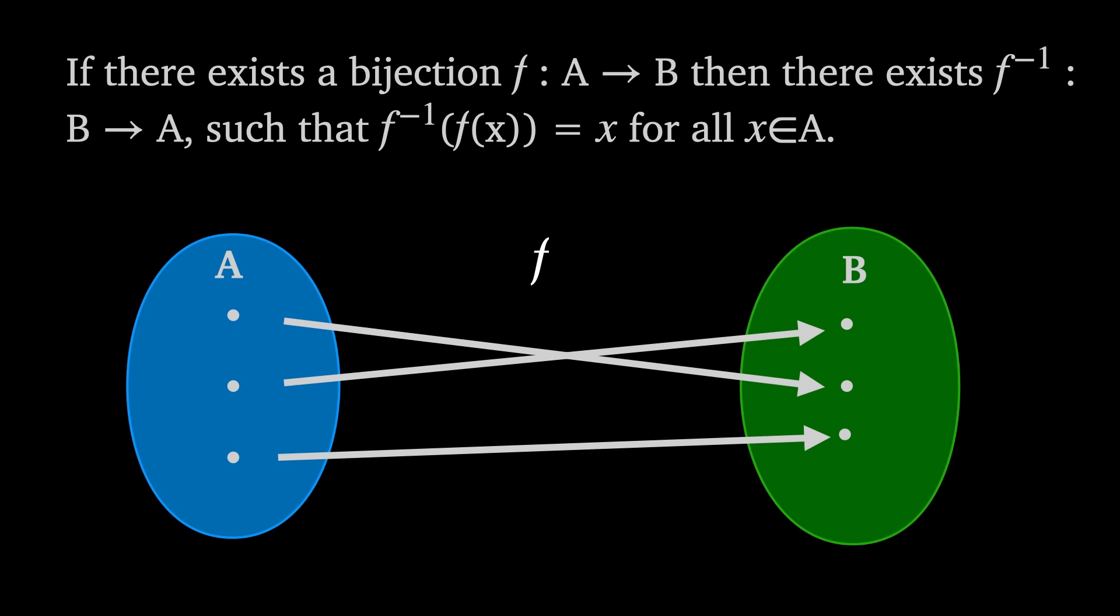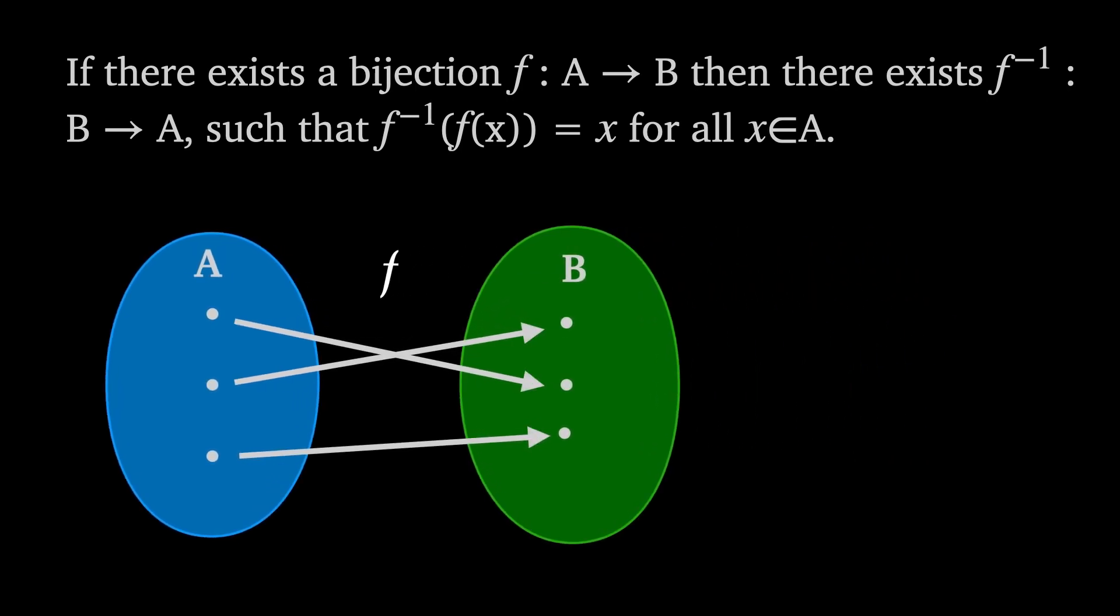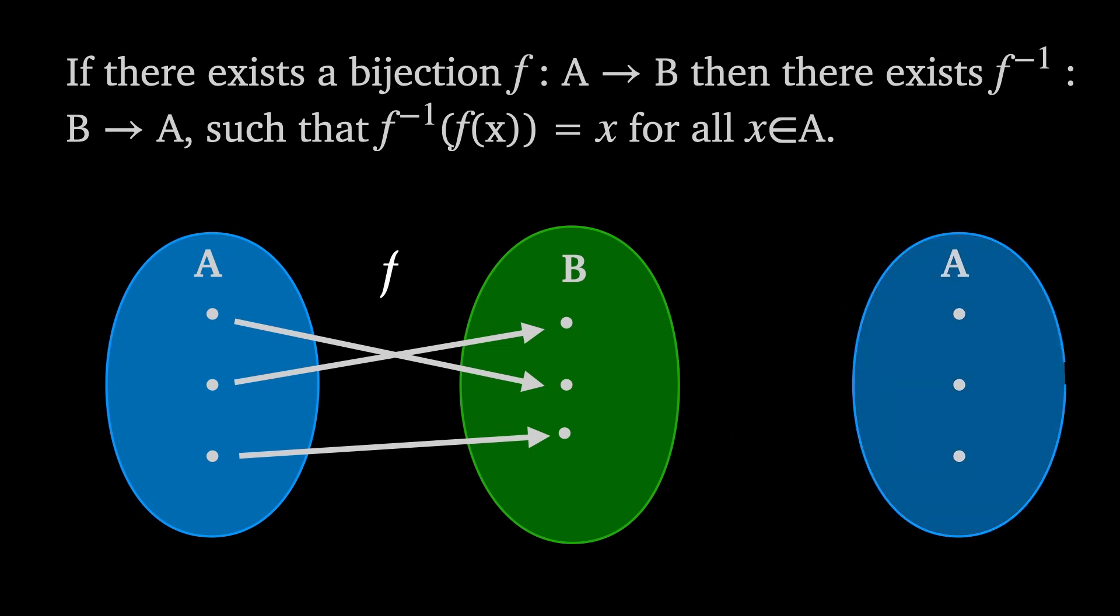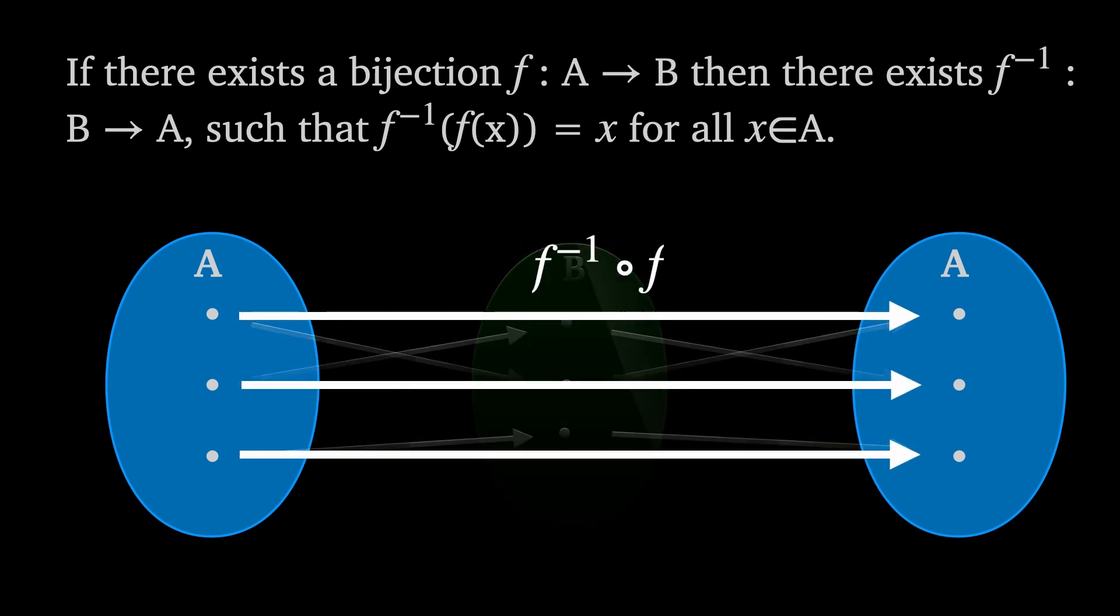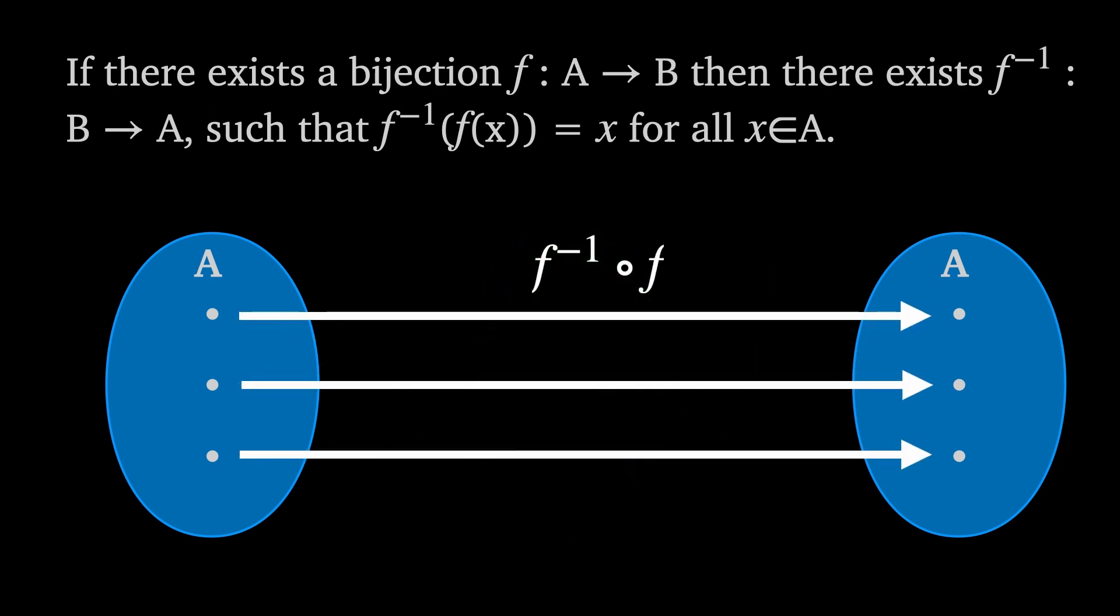Given that f(x) maps every element in A to an element in B, the inverse of f maps the elements in B back onto A, but specifically in such a way that all the elements f(x) in B are mapped to the original x in A.